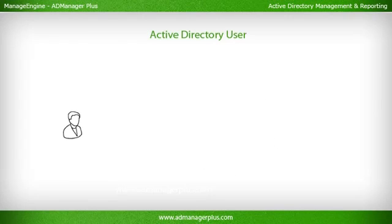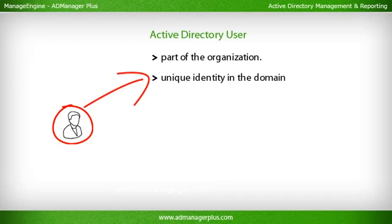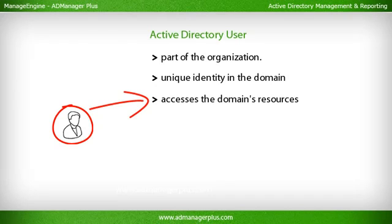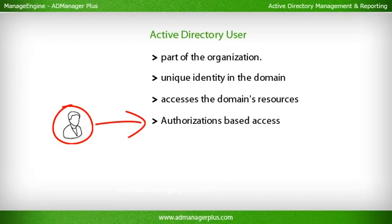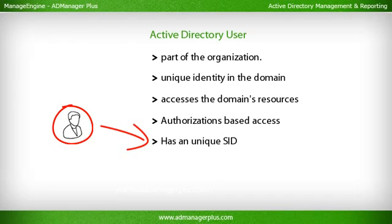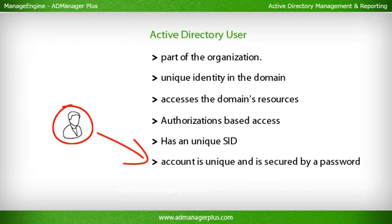An Active Directory User is an individual or person who is part of the organization. They get a unique identity in the domain through their user account, and enter the domain and access its resources through that account. Each user is allowed inside a domain only after authentication, and is allowed to access resources like shared folders, printers, computers, and applications based on their authorizations. Each user account has a unique SID which authorizes, allows, or denies the user access to network objects and resources. Each user's account is unique and secured by a password.